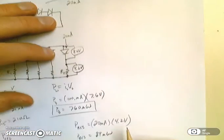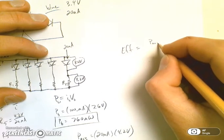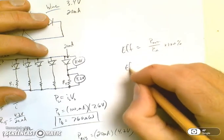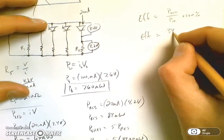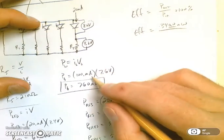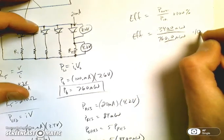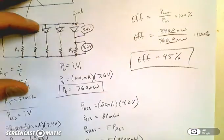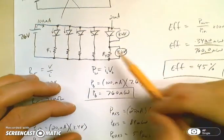Now what I want to do is I want to find the efficiency of the system. That's going to be equal to the power out over the power in times 100%. The output power is the power from the LEDs giving off the light, so that's 340 milliwatts. The power in is the power from the battery, which is 760 milliwatts. So my efficiency is 45%, which is not great. That goes through the efficiency of this particular setup.